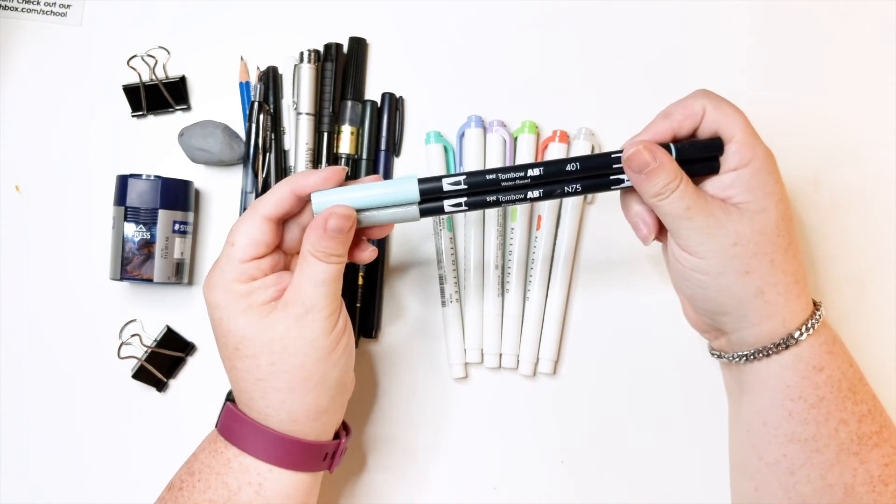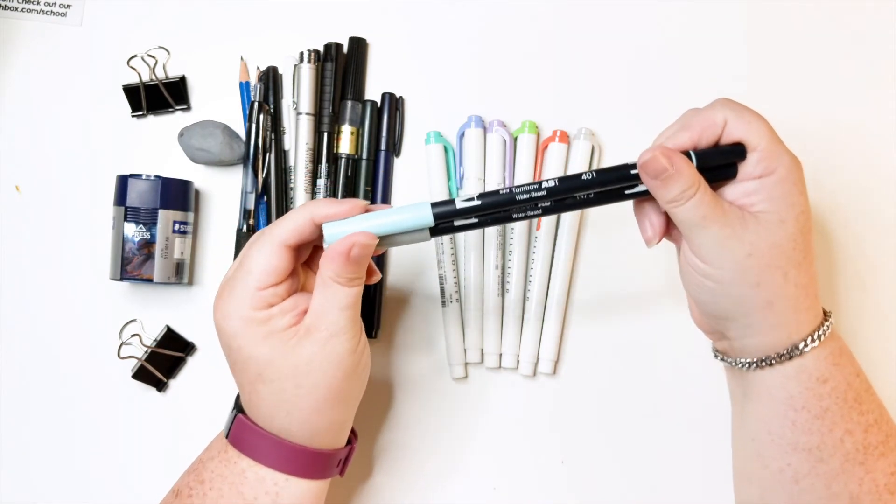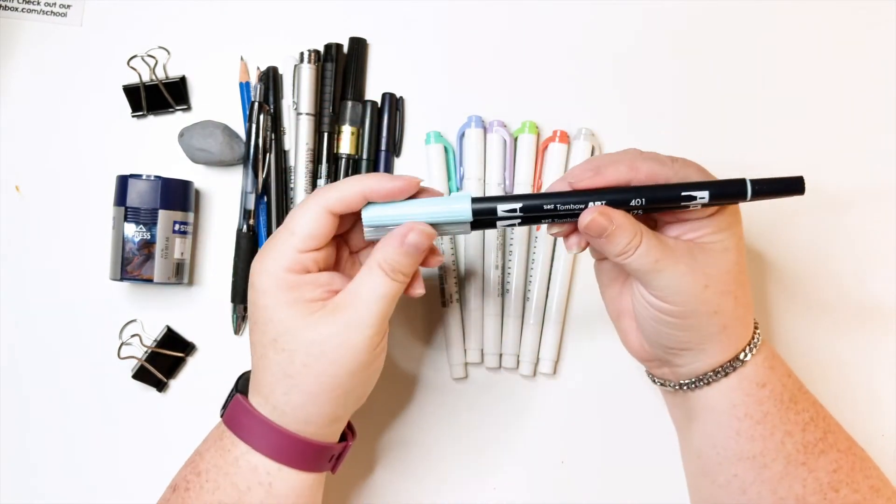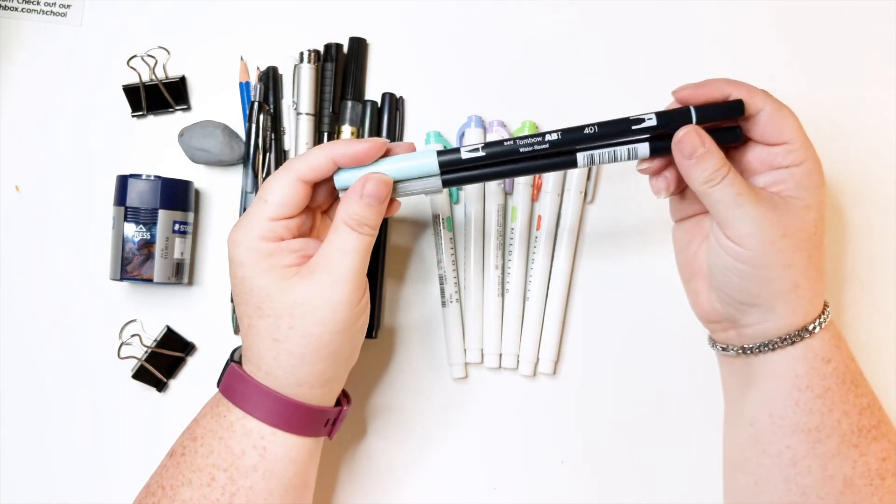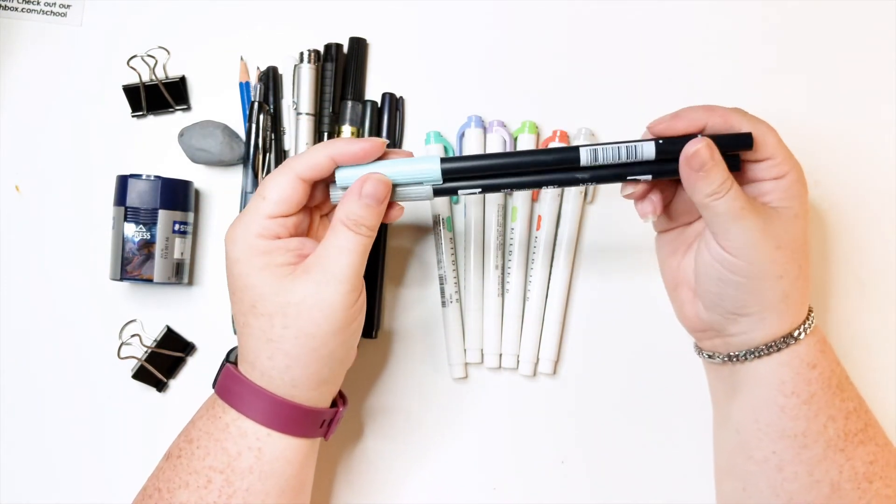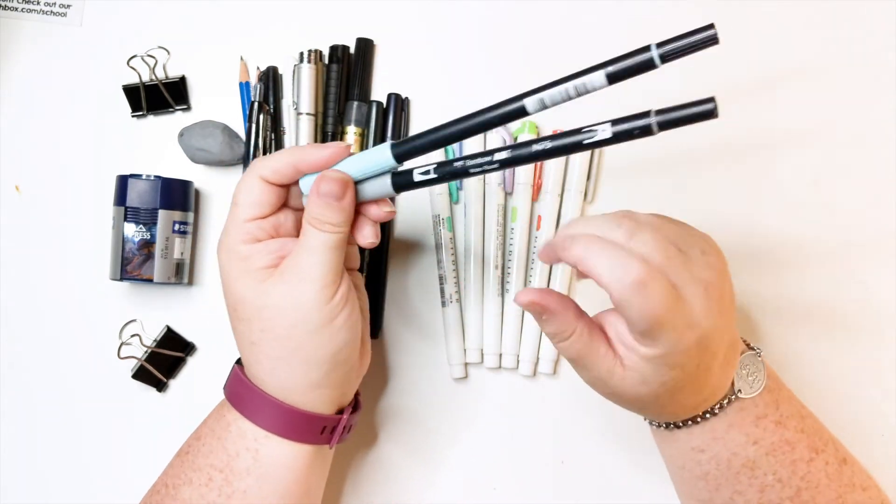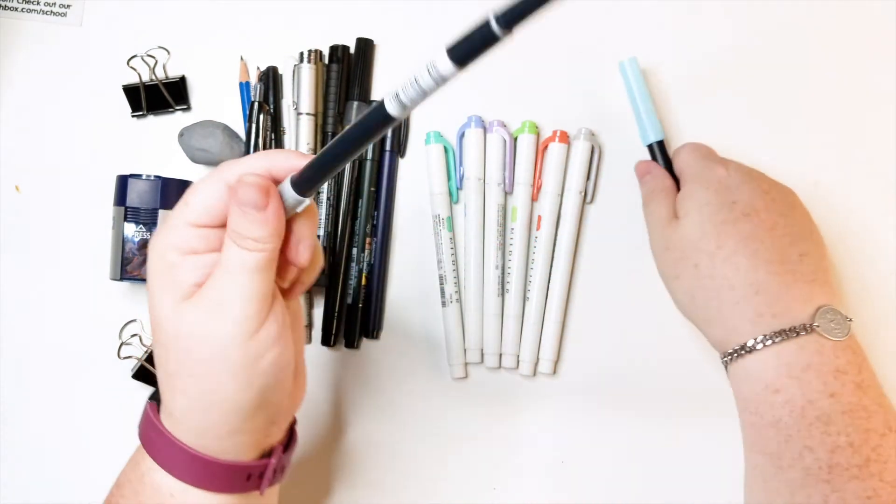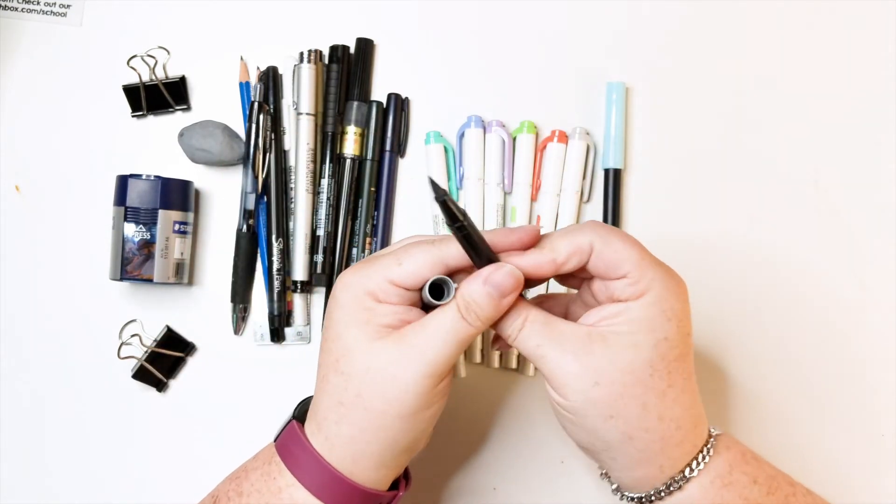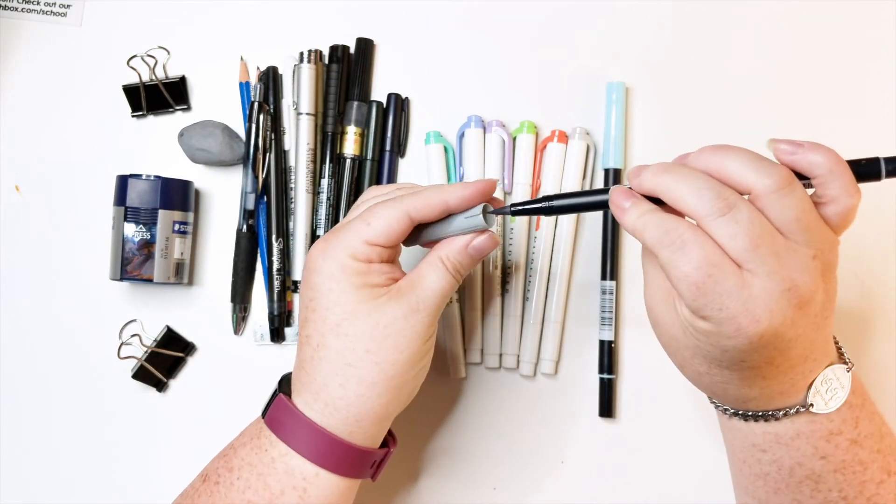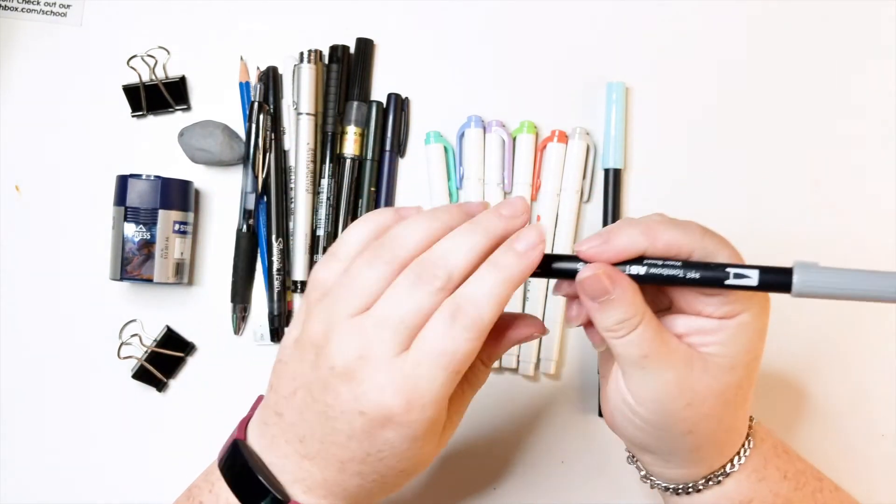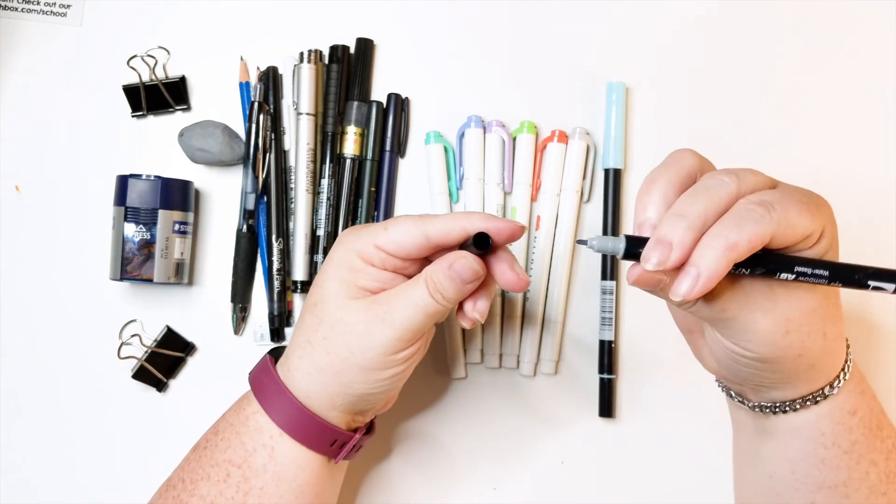And I use these in my bullet journal. I also like these Tombow. They're water-based and you can add water and do certain techniques with them that would more look like watercolor. But these are also good. Here, I'll open one. They have the brush end at one end. So if you're into calligraphy, they're really nice for that. And they have a bullet nib.